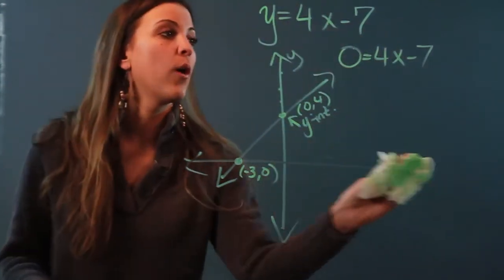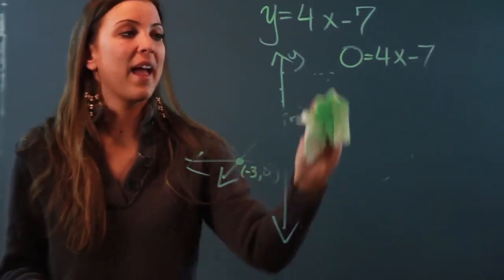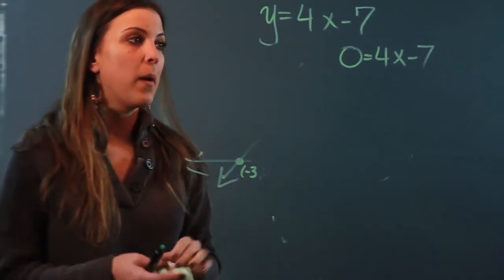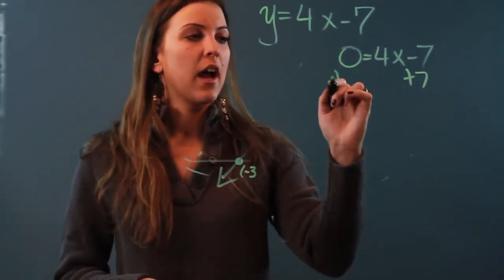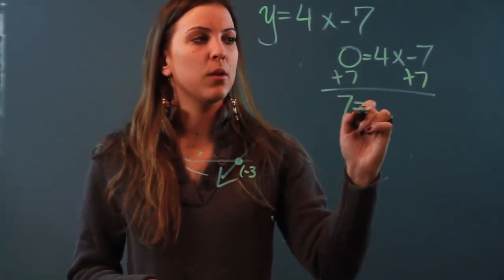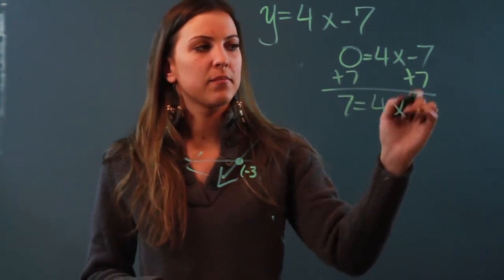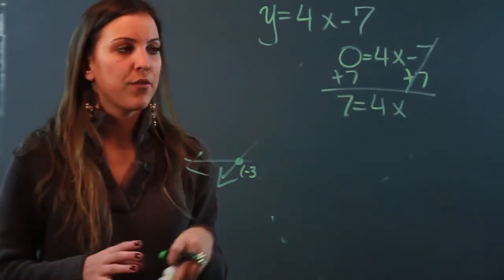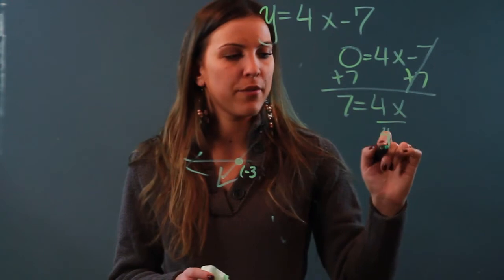All I have to do is solve for x. So I have to get x alone and I'm going to do that by adding seven to both sides first. If you add seven to both sides, on the left side you're going to end with seven equals four x. These cancel out.